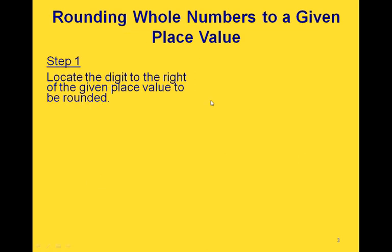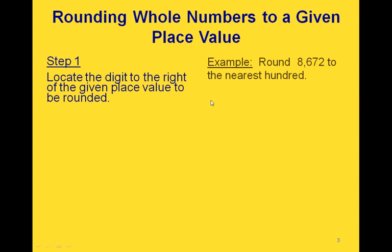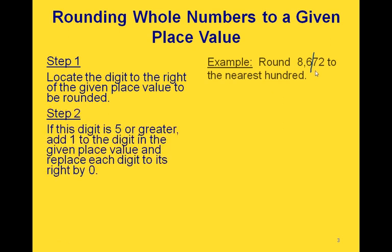We're going to go through a set of steps to help you round whole numbers to a certain place value, and we'll do an example as we go. The first step is to find the digit to the right of the place value to be rounded. In our example, we want to round to the nearest hundred, so we locate the digit to the right of the hundreds place by drawing a line just to the right of it. The digit we're looking at is the 7.